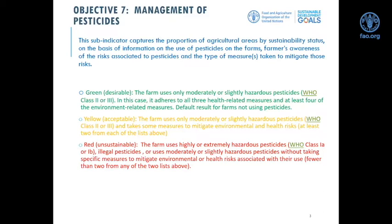Concerning the management of pesticide, the idea behind this sub-indicator is similar to the analysis of the management of fertilizer, but with a few adjustments. The idea is to characterize the sustainability status of agricultural area associated with a given holding, according to whether the holding uses pesticide and whether there is farmer awareness of the risk associated with pesticide use, both environmental and health-related risk.